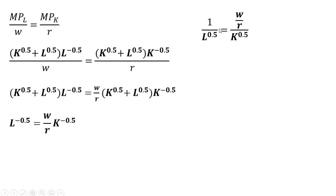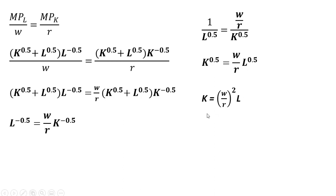Following the rules of exponents, we move L to the minus 0.5 down into the denominator, likewise doing a similar thing for capital. Now cross-multiplying, and then to get rid of this K to the 0.5, we square both sides. We have this expression, and if we were to solve this expression for L, we have the following. We'll come back to these two expressions in a second.